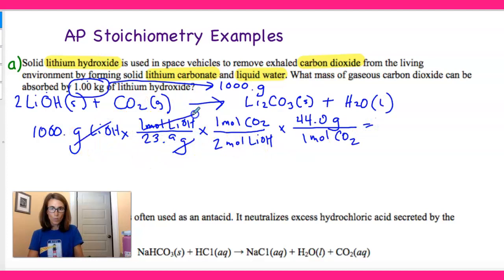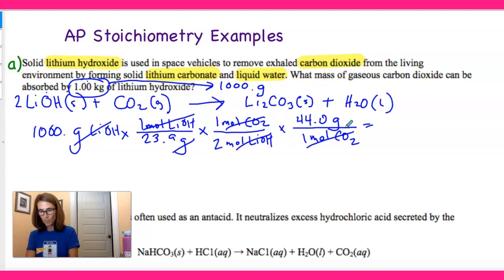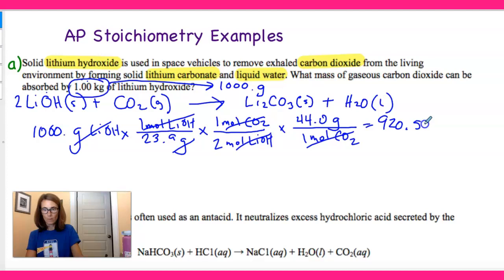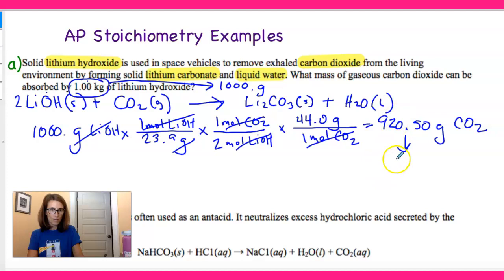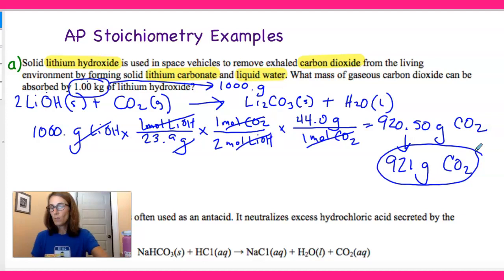Let's cancel some units: grams LiOH, moles LiOH, moles CO₂. Now let's do the math — multiply everything on top: 1000 × 44, then divide by (23.9 × 2). That gives 920.50 grams of CO₂. We knew we needed three sig figs, so we round to 921 grams of CO₂. That's all you have to do for that problem — pretty simple.